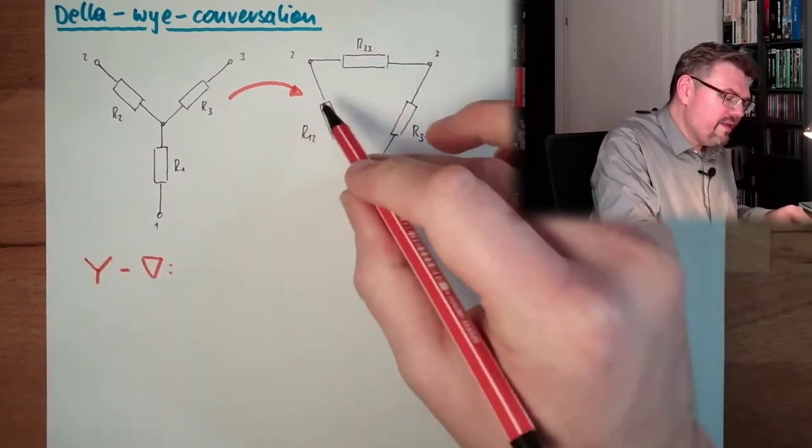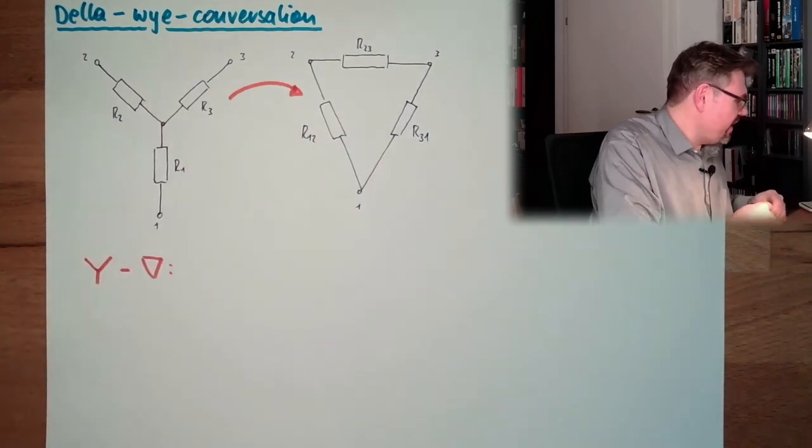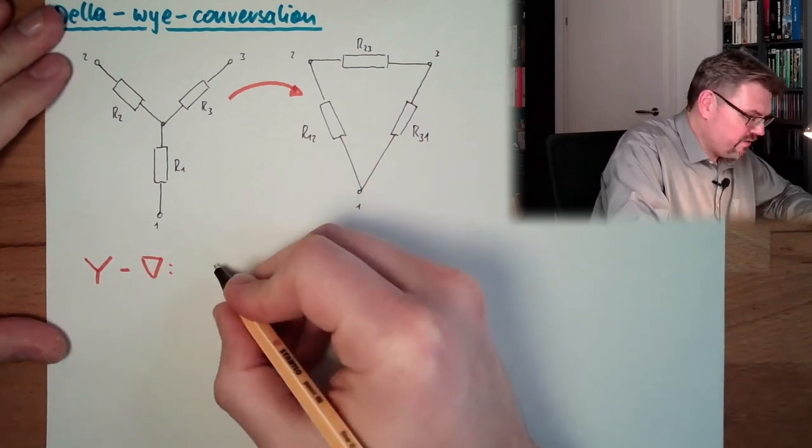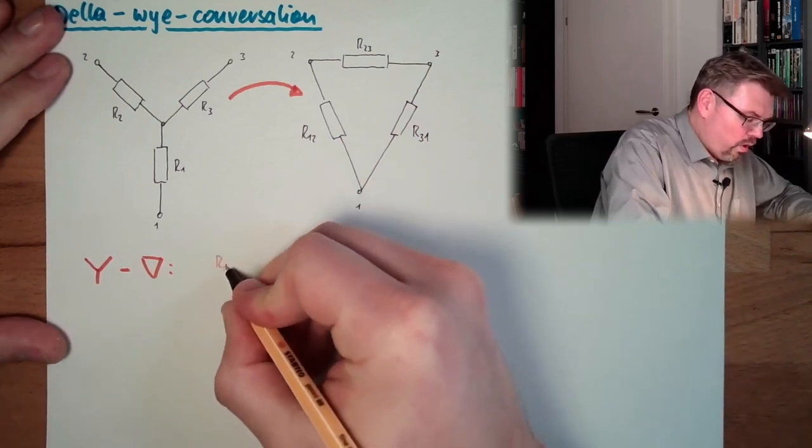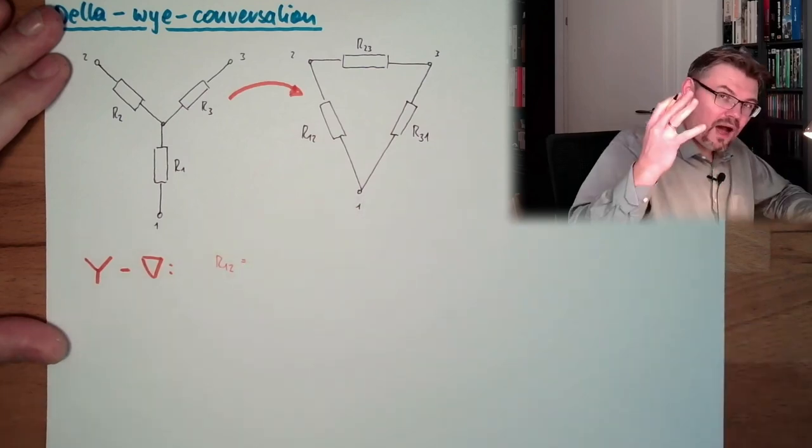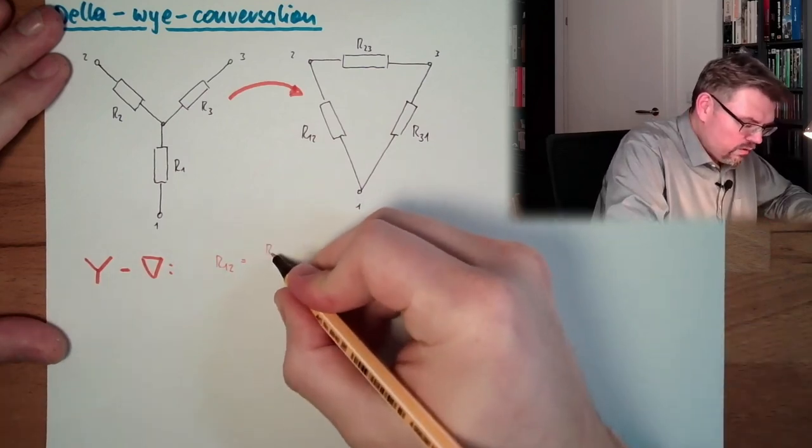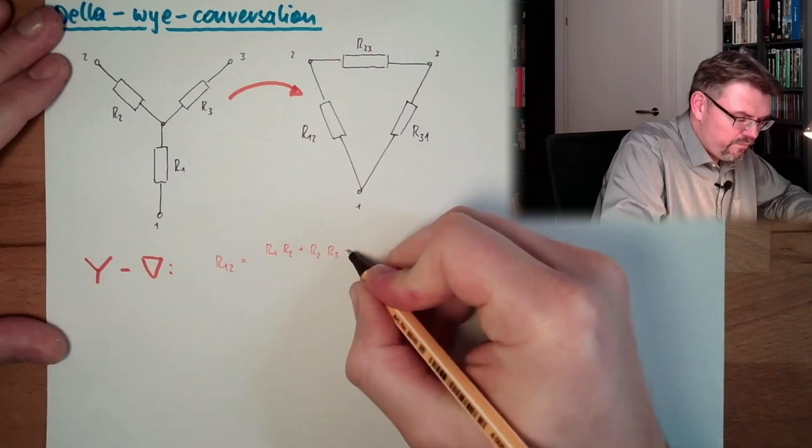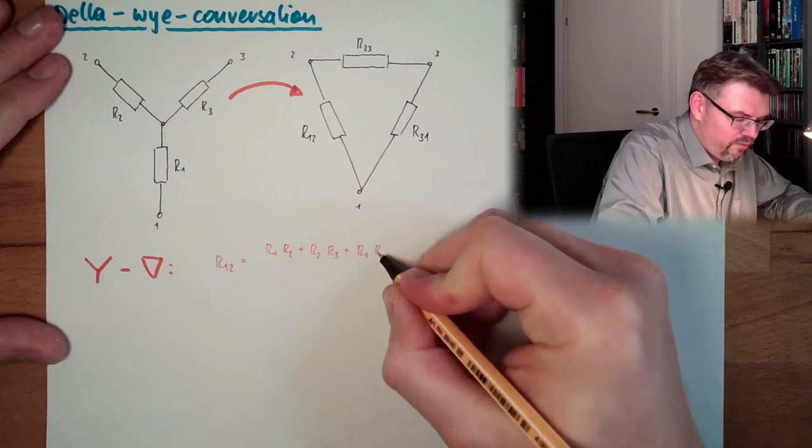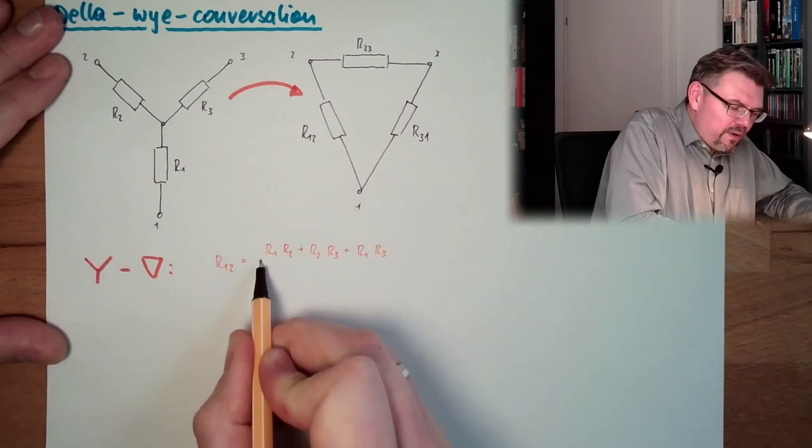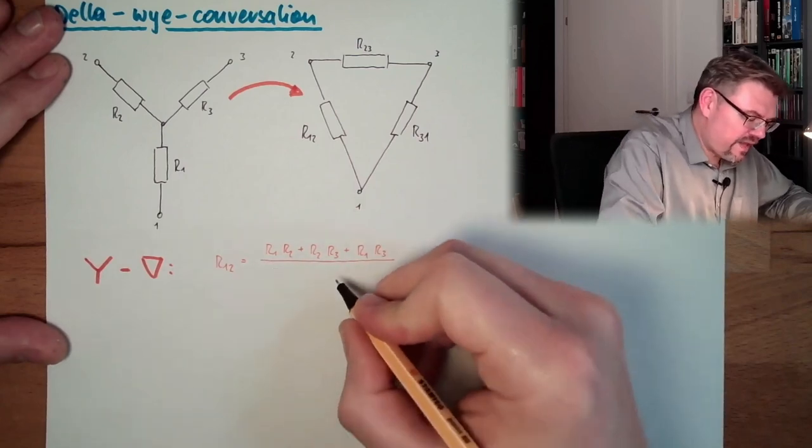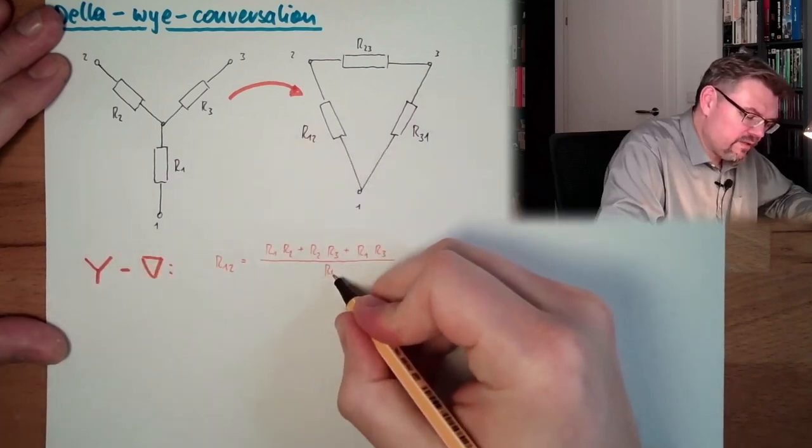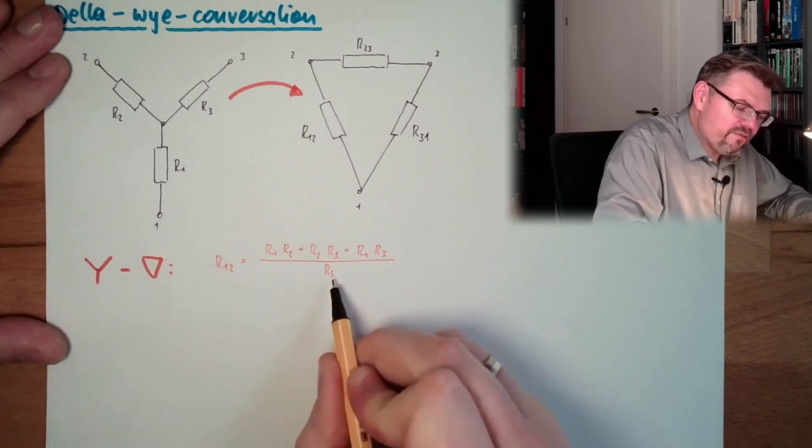We need to get those values out of these values. I'll just write it down. I will not calculate this. So r12 equals, and the pattern is always the same: r1 times r2 plus r2 times r3 plus r1 times r3, all combinations multiplied together, divided by the one which is not there, divided by r3 in this case.